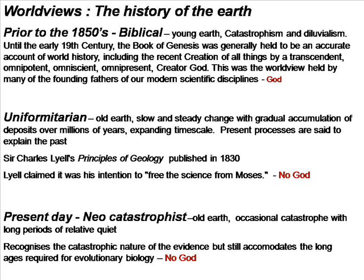Until the 1850s, the Book of Genesis was held to be an accurate account of world history, with an Earth less than 10,000 years old and having a supernatural creator. This was the worldview of many of the founding fathers of modern science, men such as Sir Isaac Newton, Louis Pasteur, and Charles Babbage.